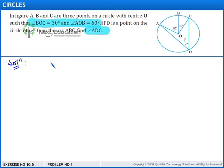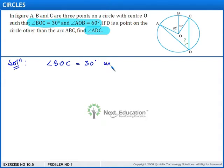Let's begin with the solution. Here we are given that angle BOC is equal to 30 degrees and angle AOB is equal to 60 degrees. We have to find angle ADC.